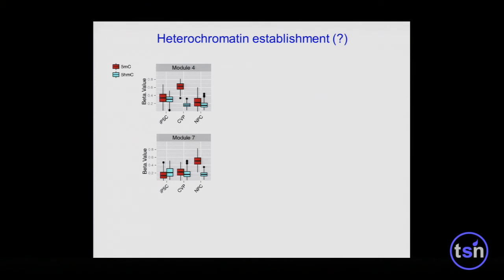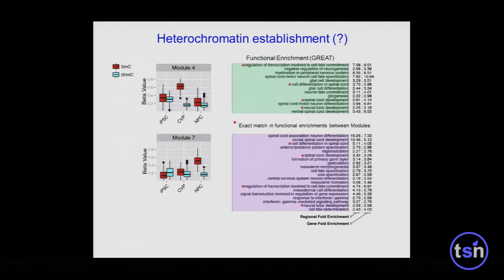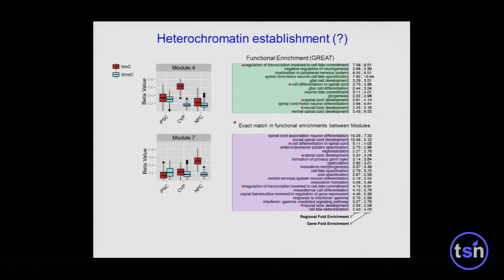In contrast, we observe two different things in Module 4 and Module 7. In Module 4 we see a dramatic increase in methylation in cardiovascular progenitors, and in Module 7 we see a dramatic increase in 5-MC in neural progenitor cells with decreases of 5-HMC. We thought this would be typical heterochromatin establishment and silencing of neuronal-type genes in the cardiovascular lineage. We were surprised to find that both modules converged on functional enrichments specific for neuronal processes — specifically spinal cord motor neuron cell fate, glial cell differentiation, and spinal cord development — and many of these functional enrichments were exact matches between the two different modules that had gains of 5-MC in two different cell types.